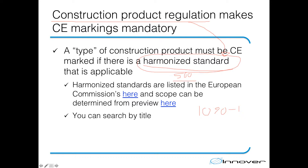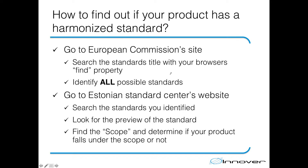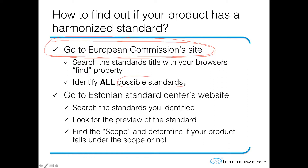The way to determine this consists of two parts. First, the European Commission's website has listed all harmonized standards, but this site only has the titles and reference numbers of the standards. What you are required to do is determine if your product falls under the scope of any of those standards. Then you must go to the Estonian Standards Centre website where you can see a preview of each standard and determine if the scope includes your product. Let's take a look at how you can do it in practice.